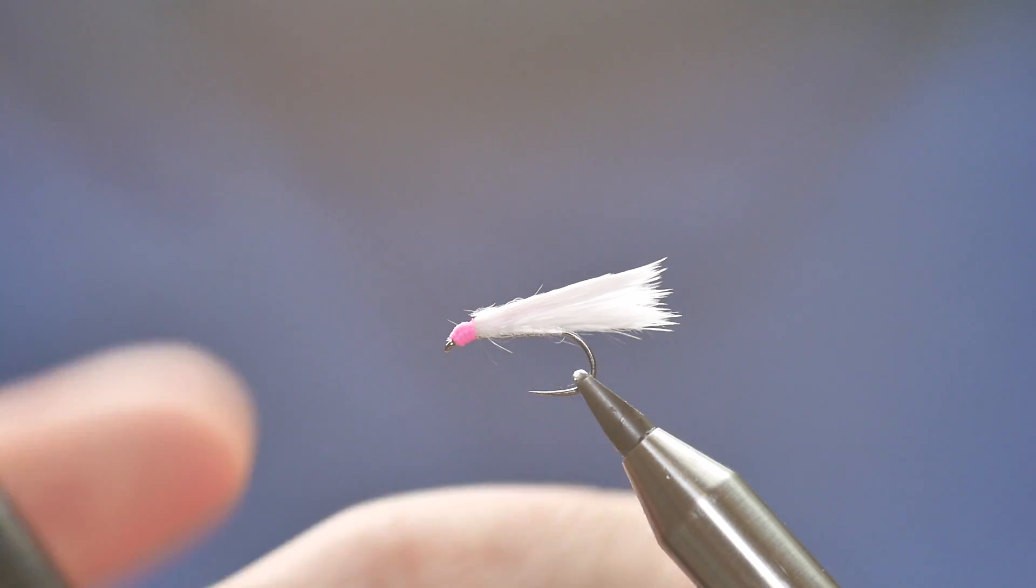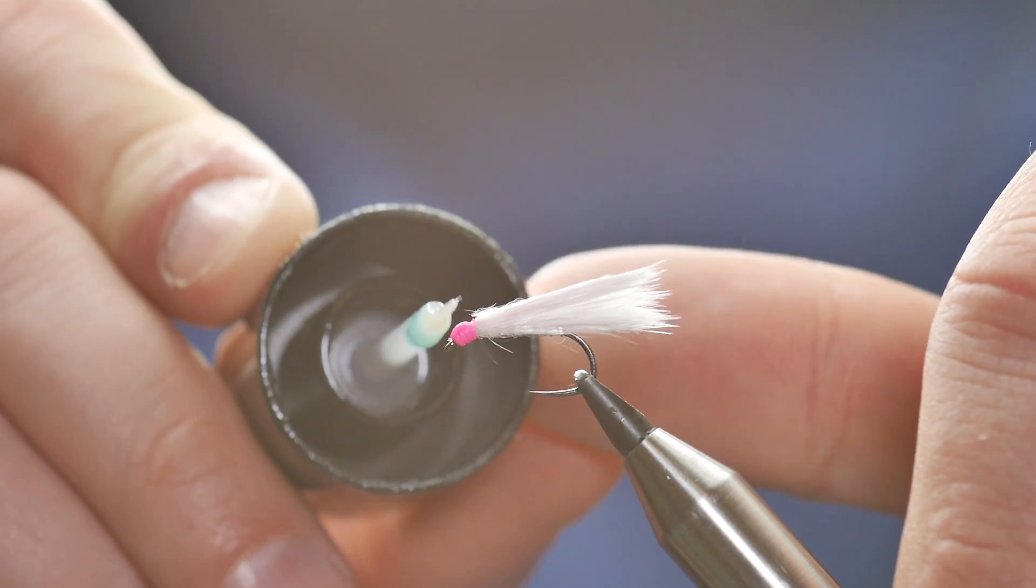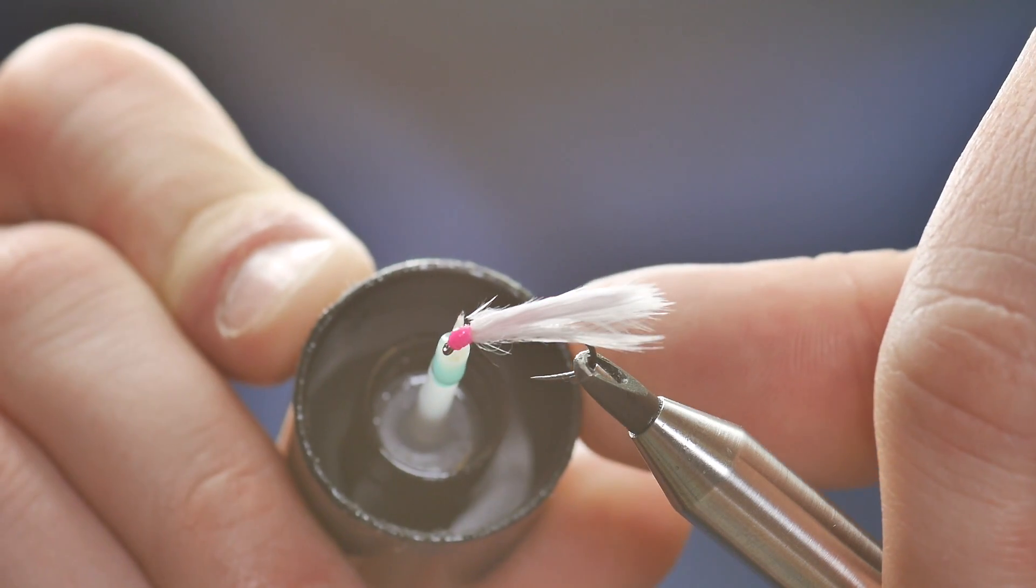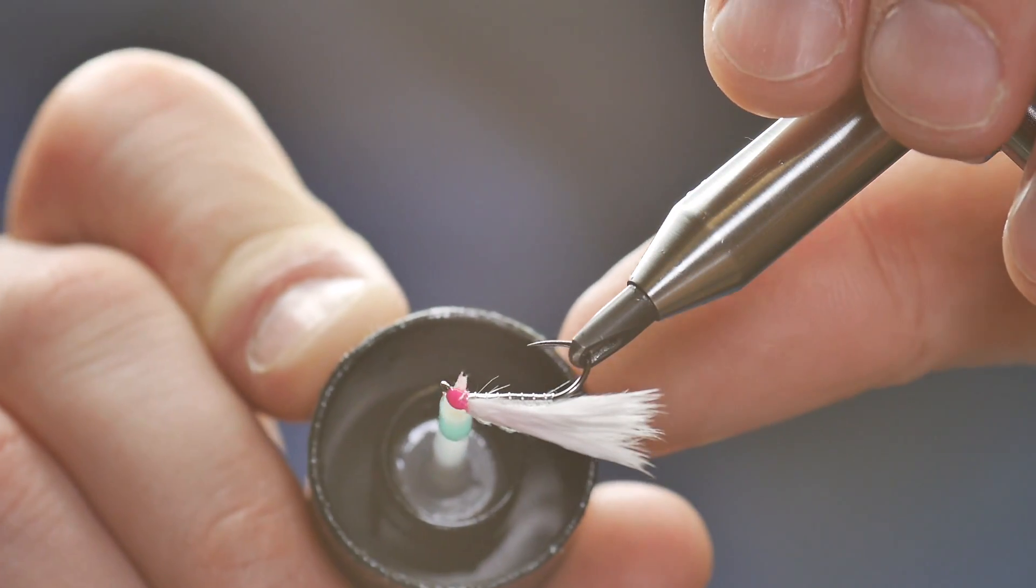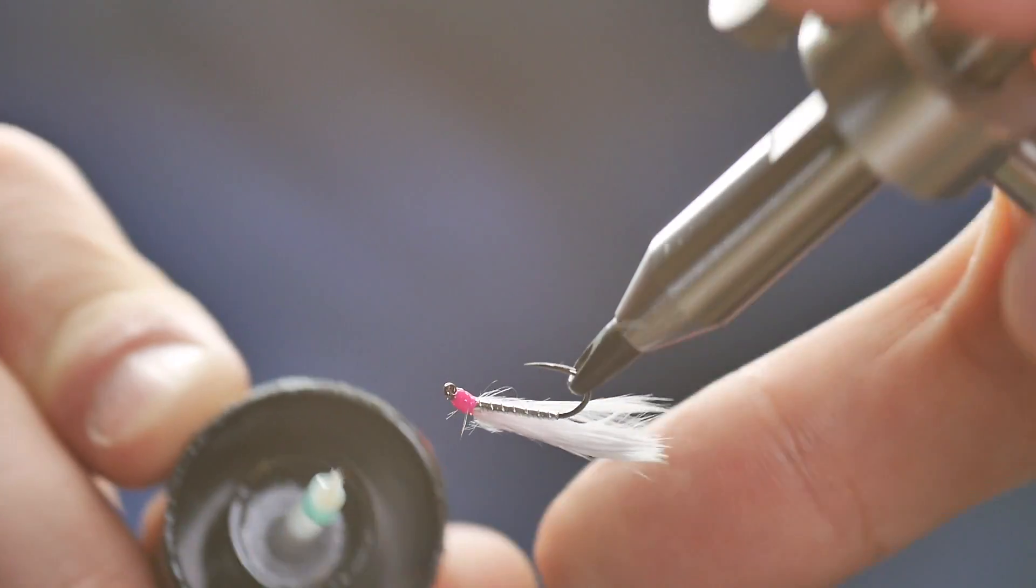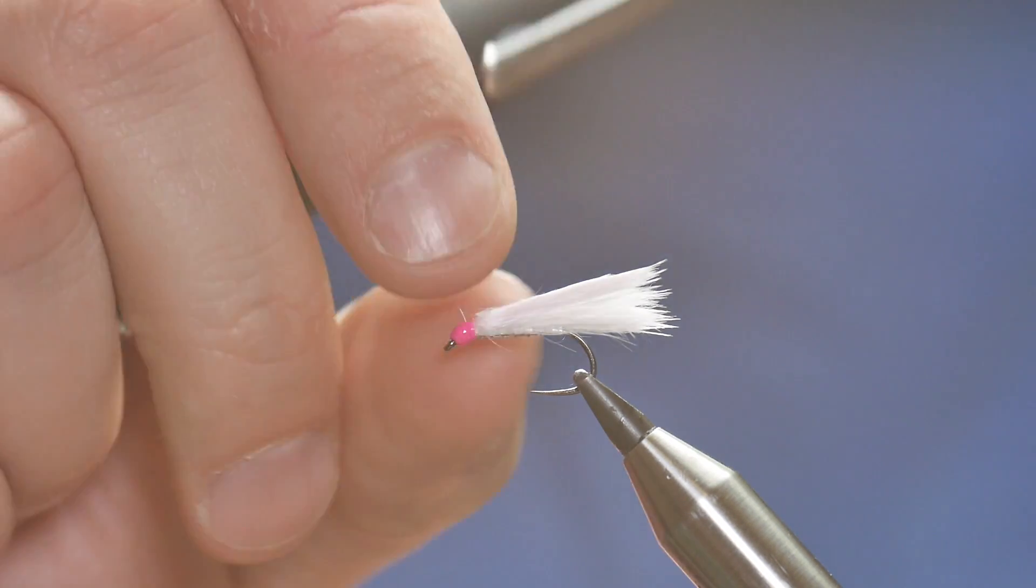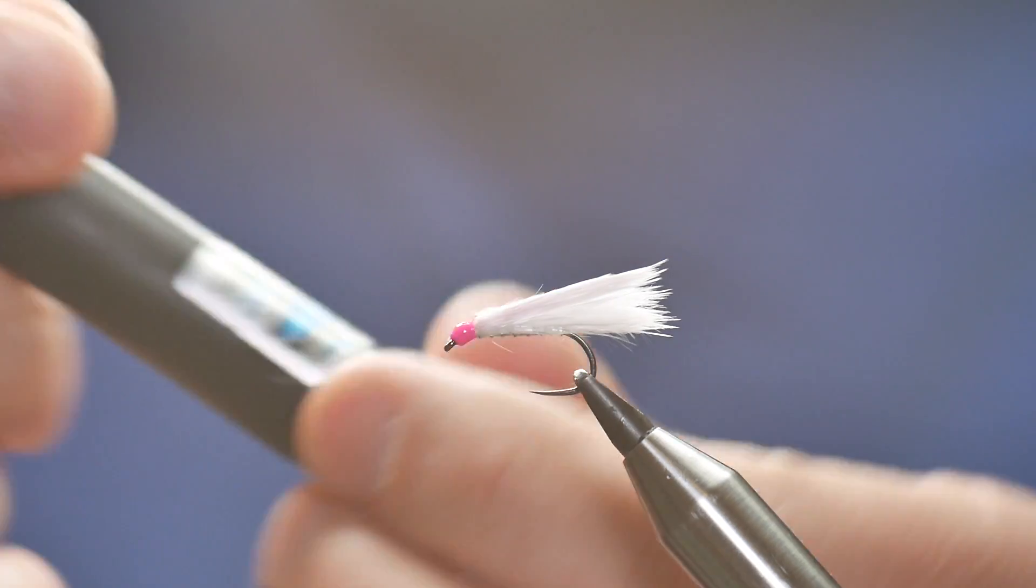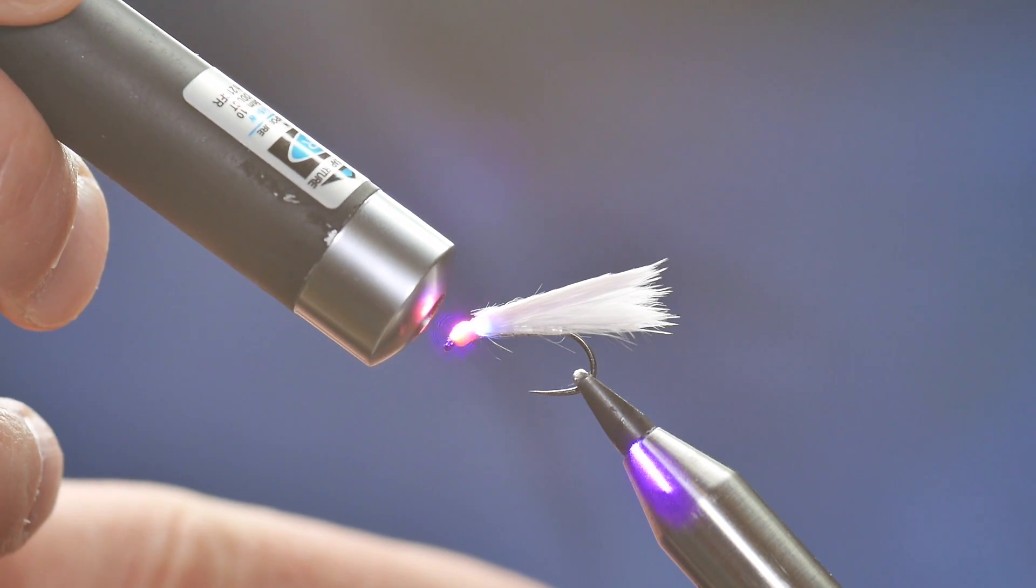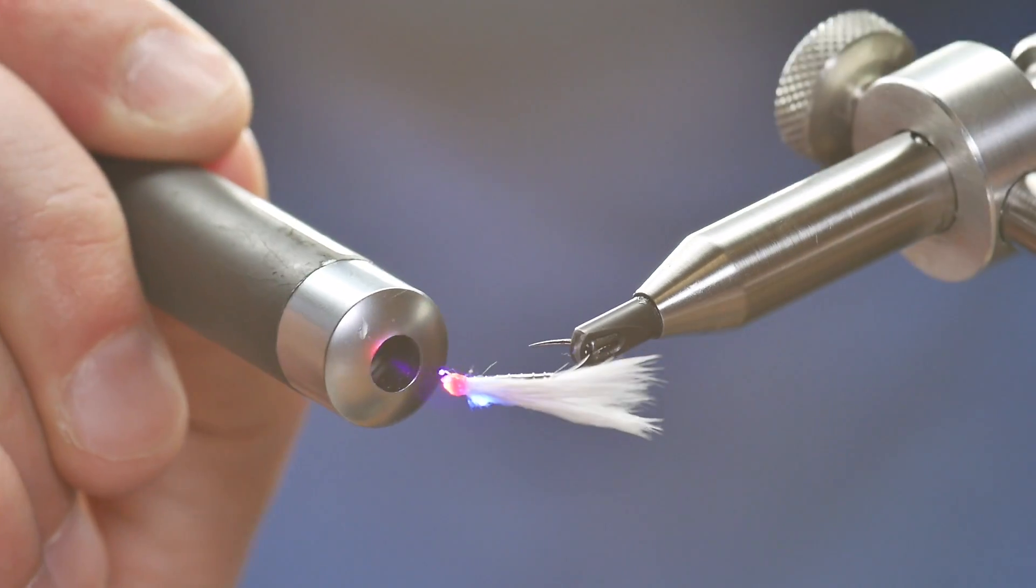And to finish off you can use a little bit of varnish or in my case some UV resin. Once you've got that on, I think I've got a wee thing caught in my resin there. Simply cure it off.